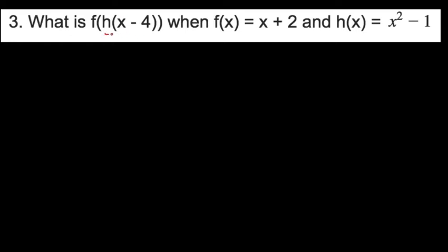And that is our h of x minus 4. That's the farthest on the inside. So we have to start with h of x, which is right over here. So let's go ahead and write that out. We have h of x equals x squared minus 1.